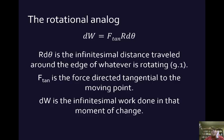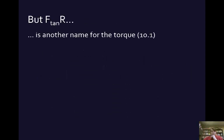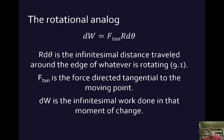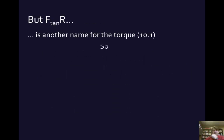Now, earlier in Chapter 10 we saw that force times the lever arm is the torque. F tangential times the radius — the lever arm — is another name for torque. So we can substitute torque for F tangential times R in the expression F tangential R dθ, and end up with the equation that the infinitesimal change in work equals the torque times the infinitesimal change in angle theta.